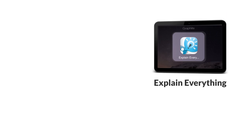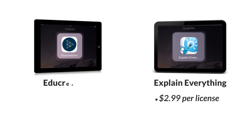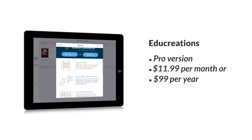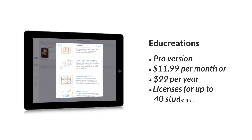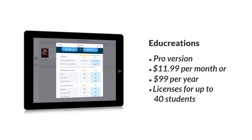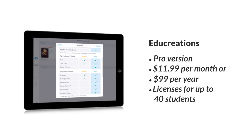Let's move on to price. Explain Everything is pretty simple here — it's going to set you back $2.99 per license. EduCreations, however, has a few choices. There's both a free version and a paid version that costs $11.99 a month, or around $99 if purchased for the year. This paid or pro version of EduCreations adds some key features, including licenses for up to 40 students. These extra licenses can offer a nice savings over Explain Everything for teachers looking to get an entire class making and sharing work.